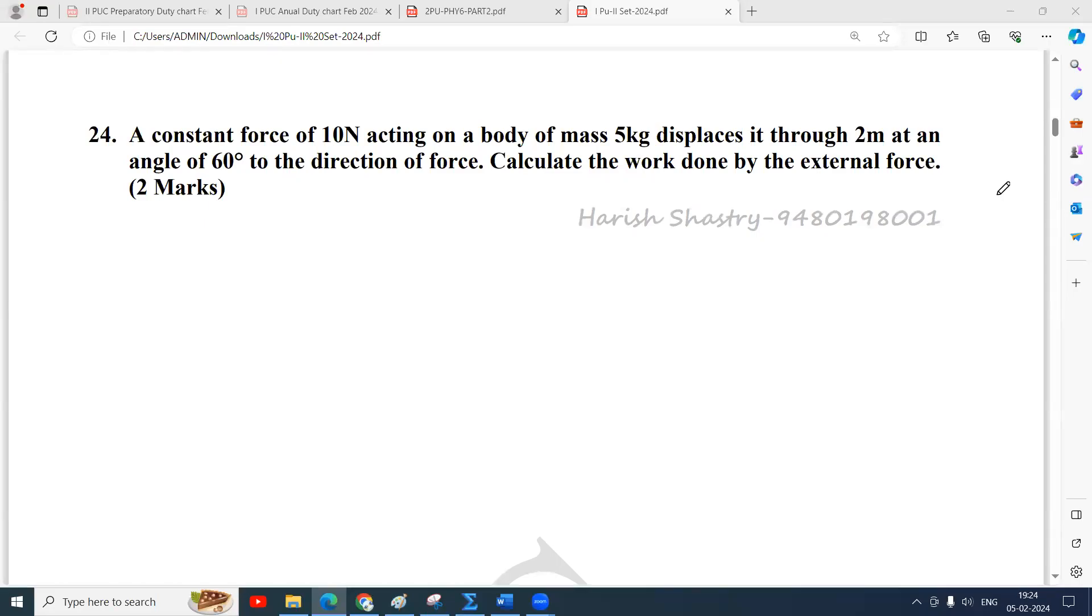Namaste everyone and here is a problem. A constant force of 10 Newton acting on a body of mass 5 kg displaces it through a distance of 2 meter at an angle of 60 degree to the direction of the force. Calculate the work done by the external force.